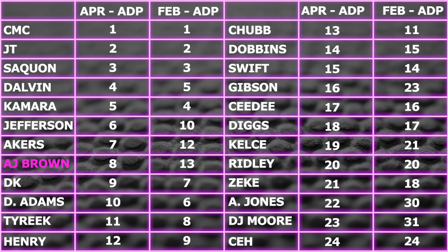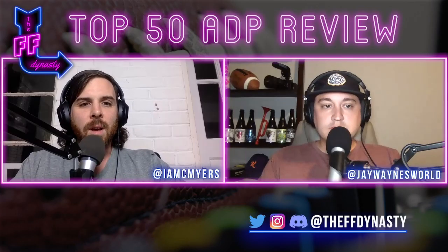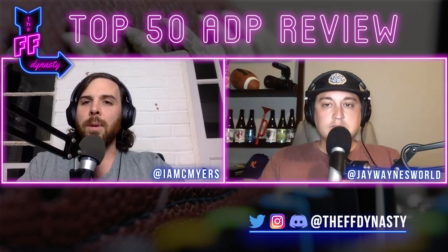AJ Brown finally jumps DK Metcalf and also passes Davante Adams and Tyreek Hill, taking the second spot in the dynasty wide receiver hierarchy — going from 13th to 8th. He was at the top of the second round and is now moving well into the back half of the first. DK comes in at nine, then Davante Adams stays at 10 — still in the first round but no longer the first wide receiver off the board.